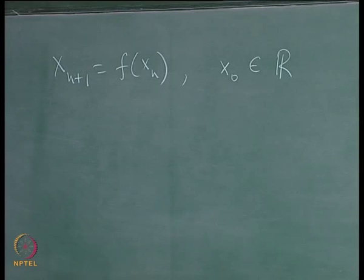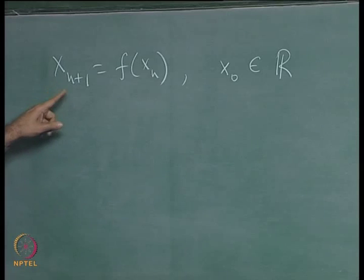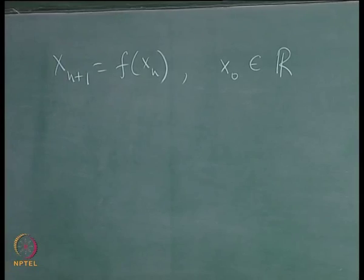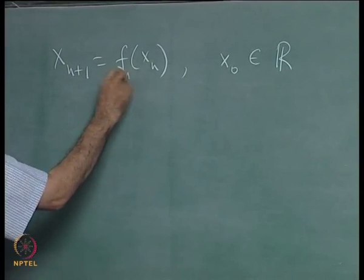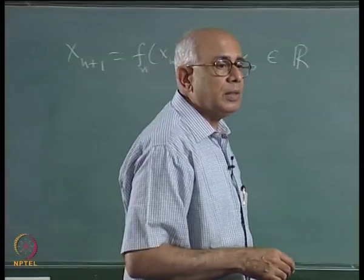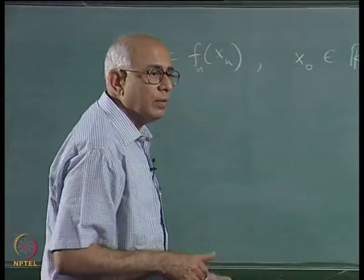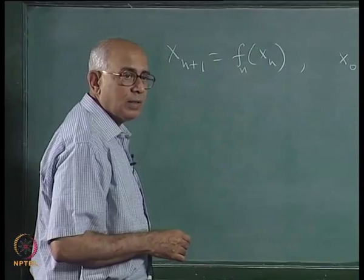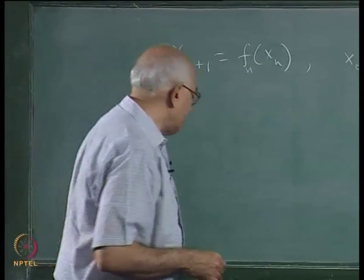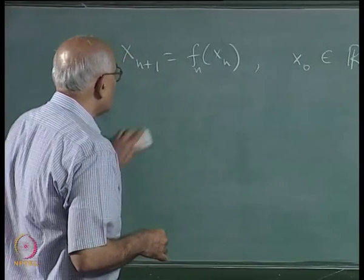Let me settle a couple of questions asked last time. The first had to do with what happens if the map function itself changes with time — if at each stage you have a different map function each time you iterate. This would be the discrete time analog of a non-autonomous system where the evolution equation explicitly involves time on the right-hand side. We are not looking at such maps to start with.